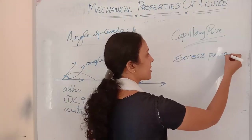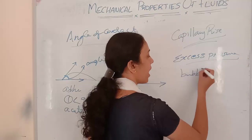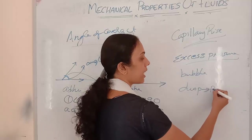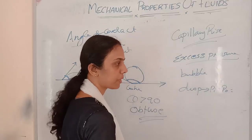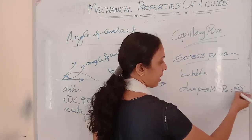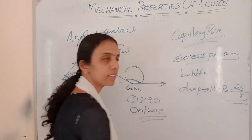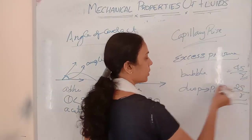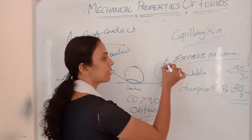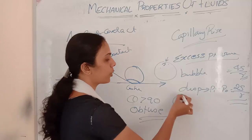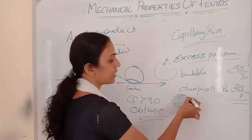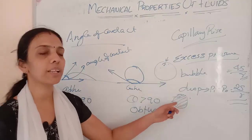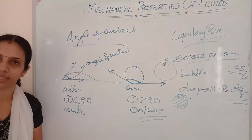Excess pressure inside a drop: Pi − Po = 2S/r, where S is surface tension and r is the radius. For a bubble, excess pressure = 4S/r, because a bubble has two surfaces whereas a drop has only one.